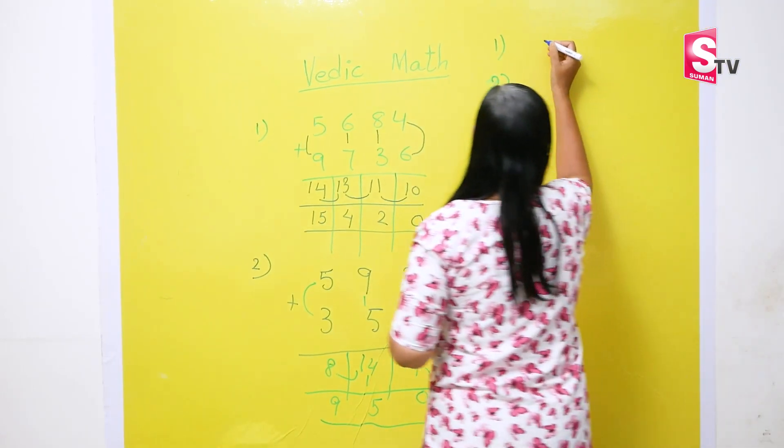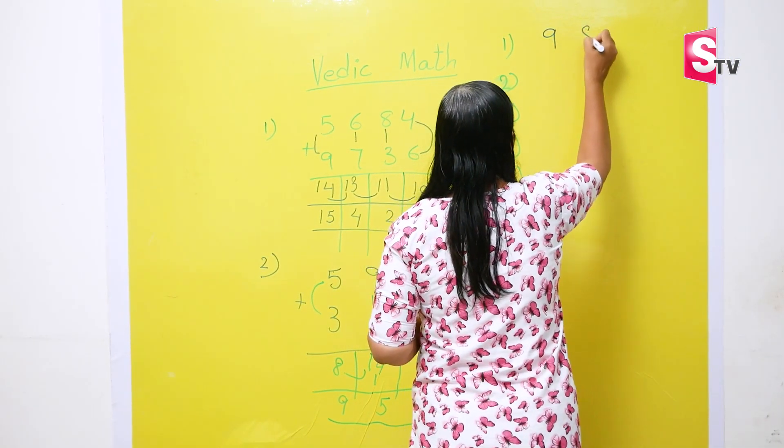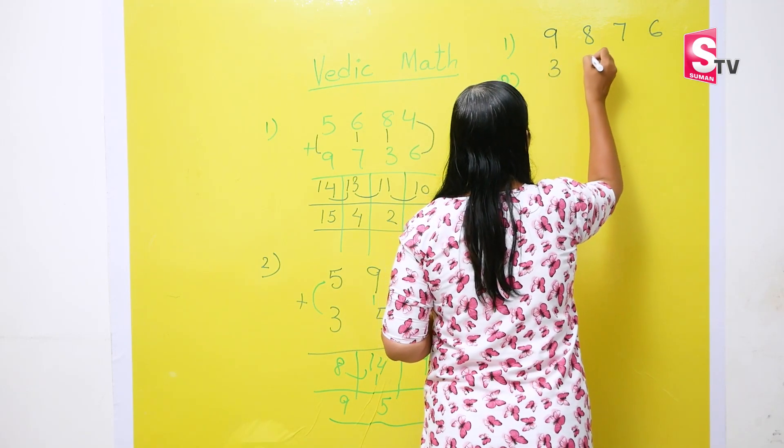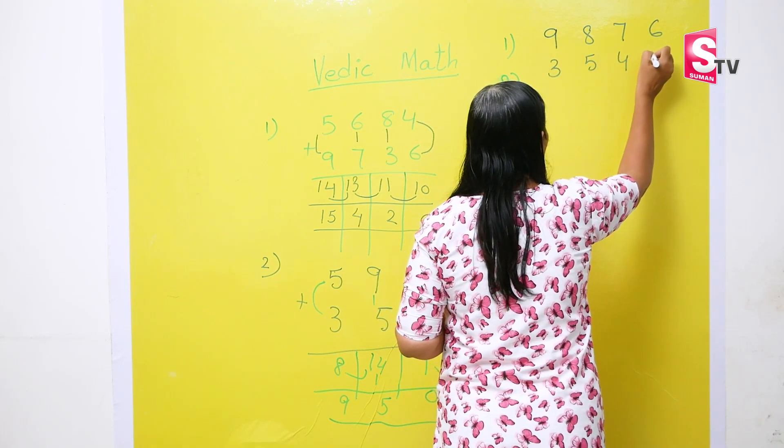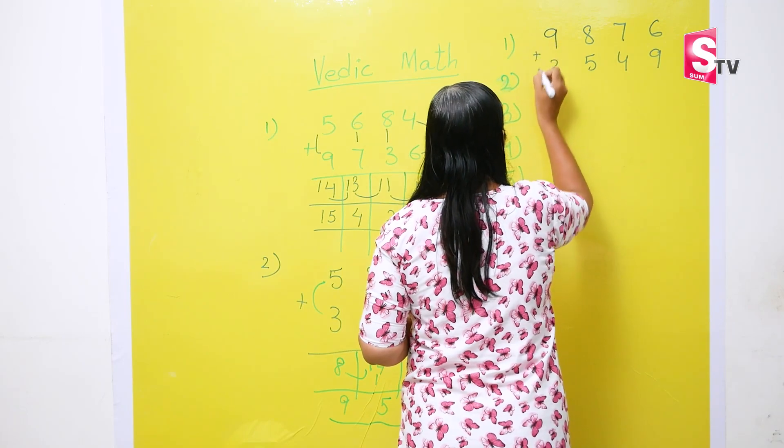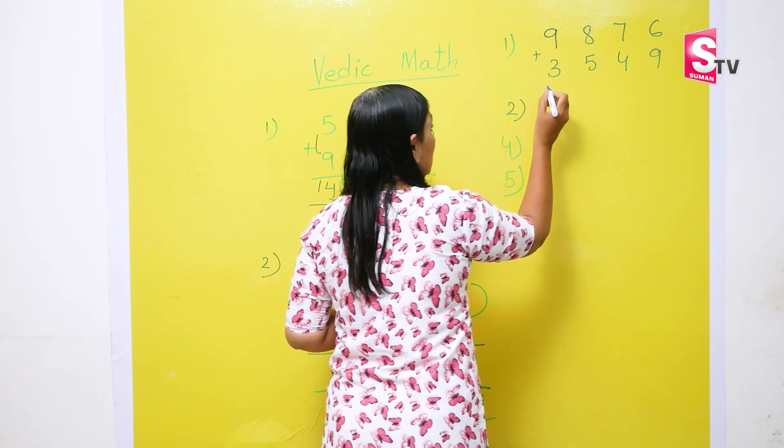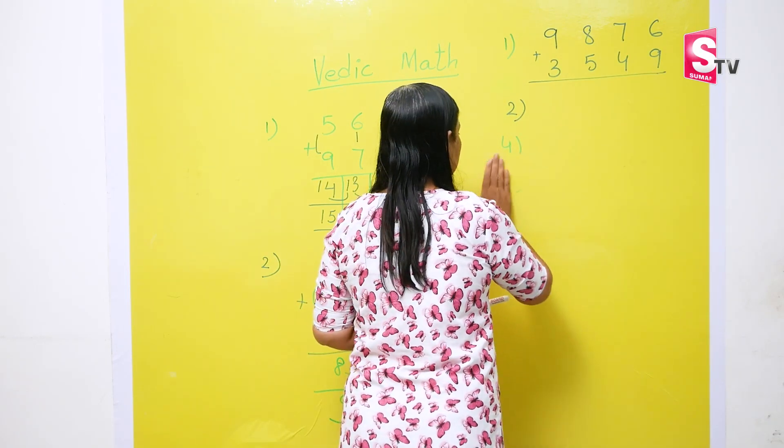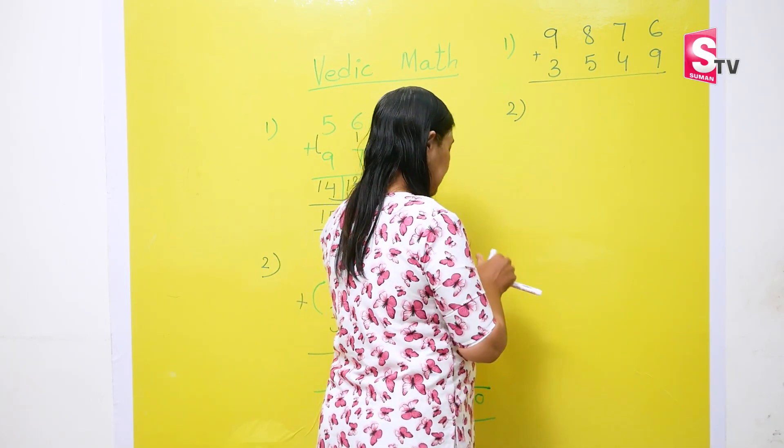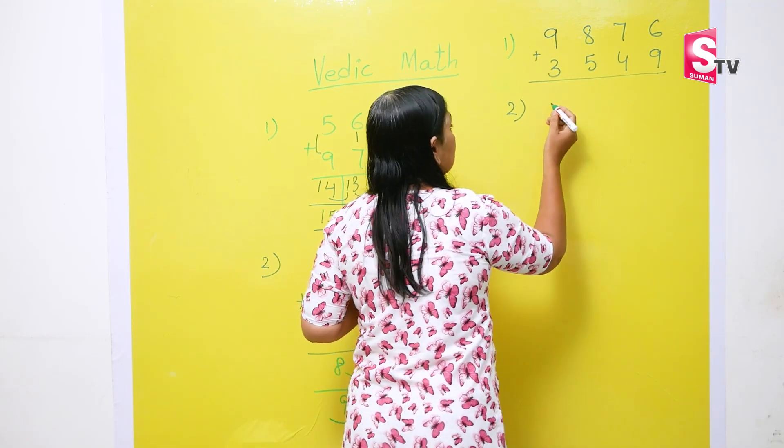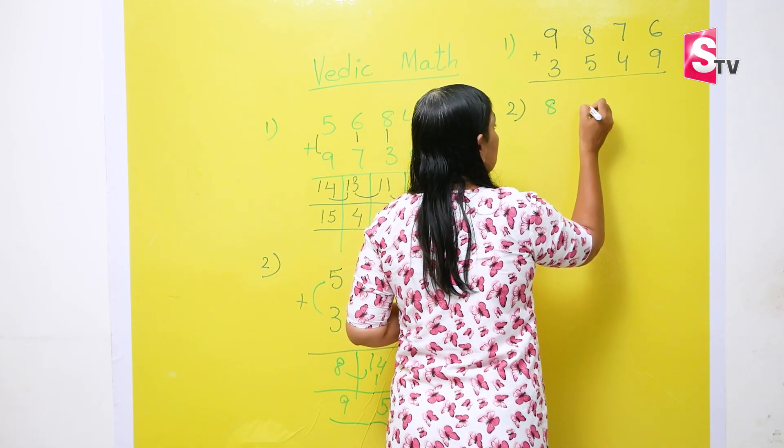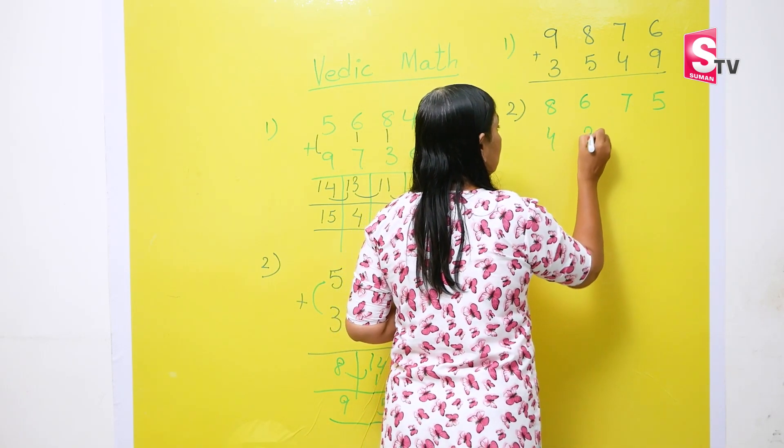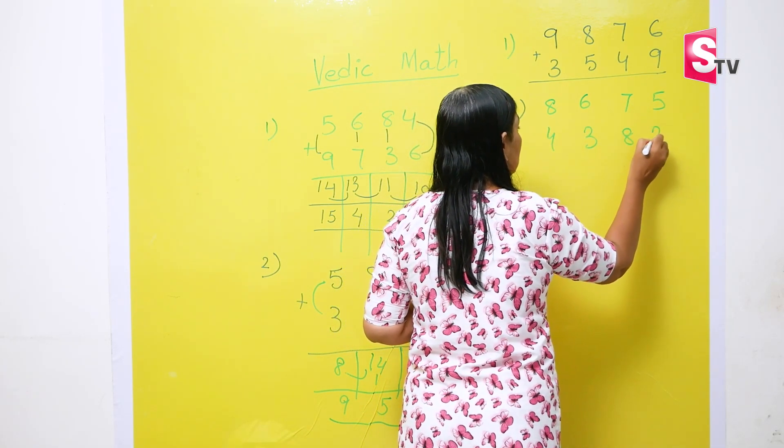So, the question goes 9876 plus 3549. This is first sum. Then you have second sum. Let me erase this. And second sum is 8675 plus 4382.